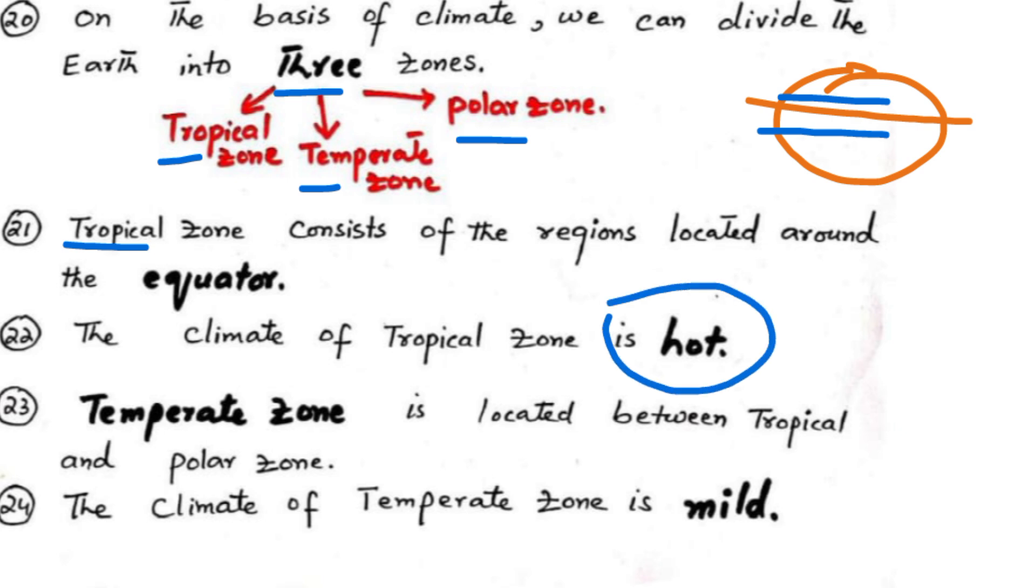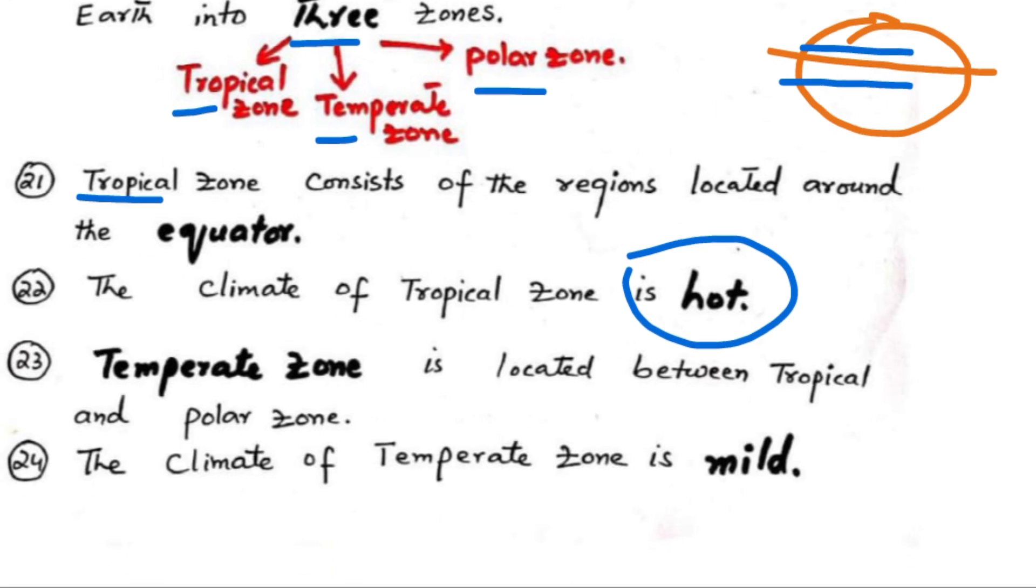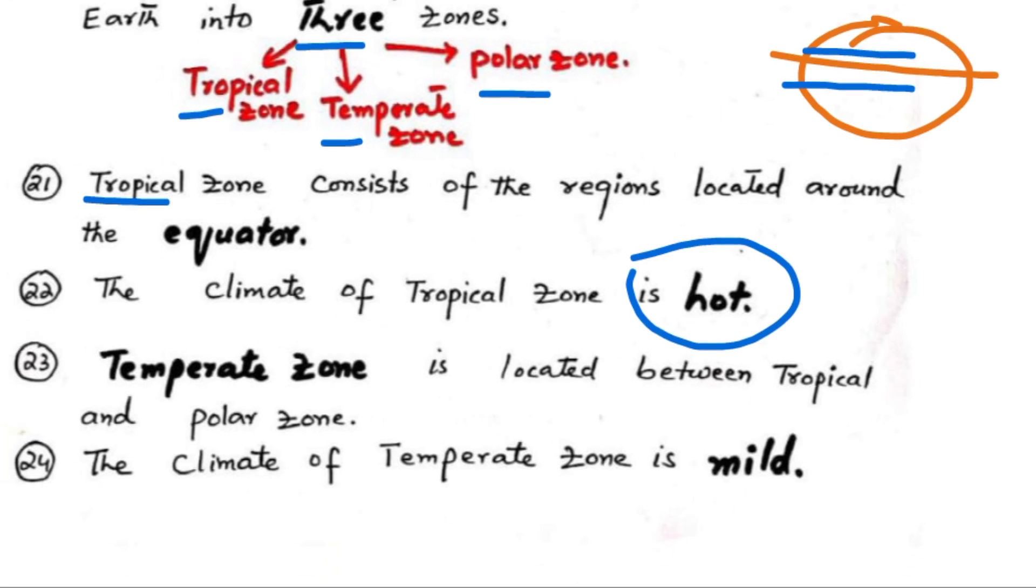Temperate zone is located between tropical and polar zones. The climate of the temperate zone is mild or moderate.